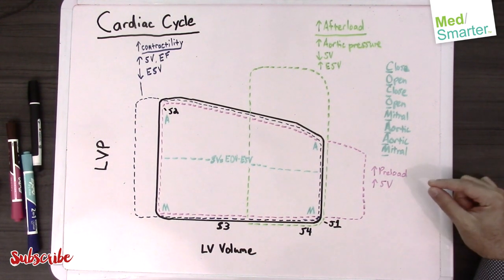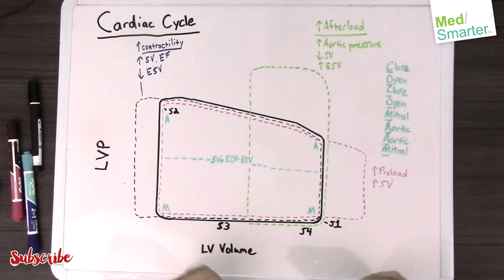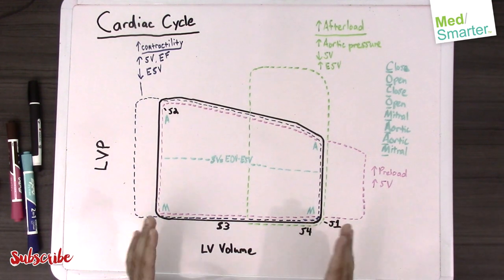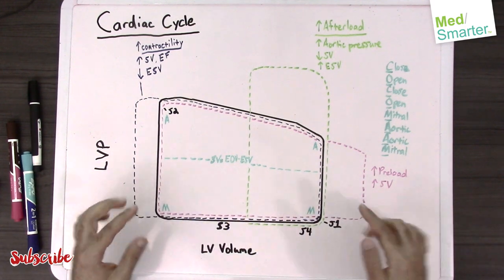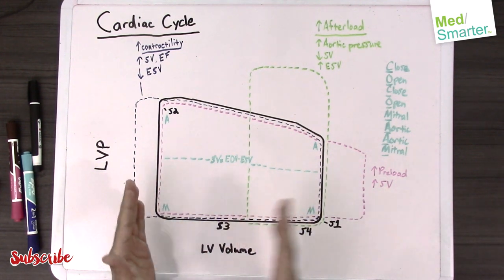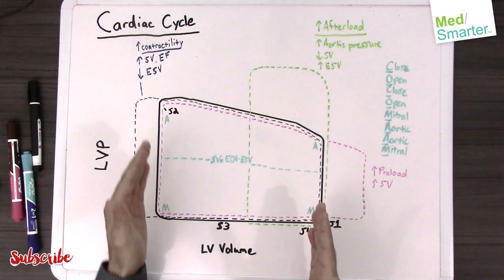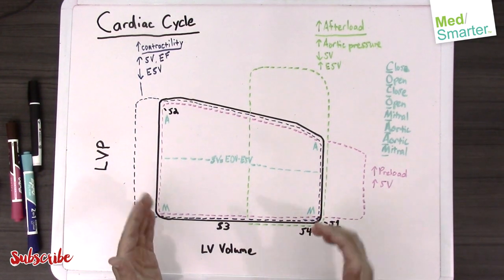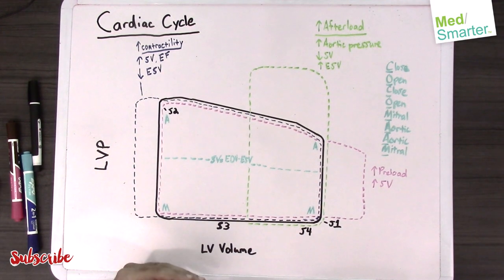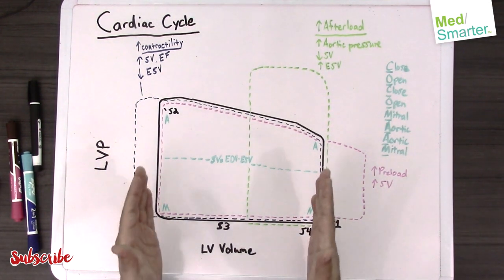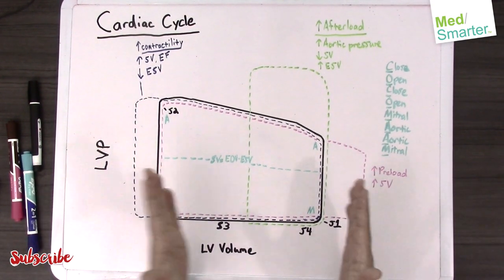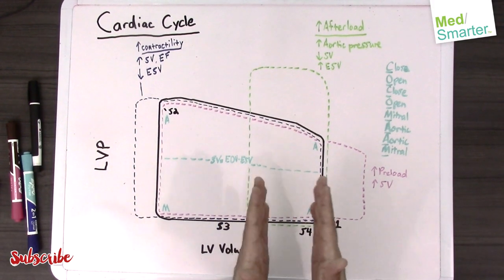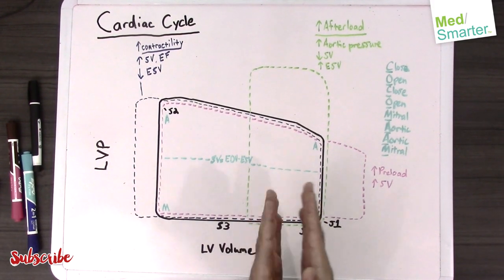With high preload, we have to take into account something called stroke volume. Stroke volume is basically this horizontal line. It looks into how much blood we had at the filling point and then how much blood after ejection is left over, so the difference between the two. The wider this graph, the more the stroke volume. The smaller the graph horizontally is the less the stroke volume.